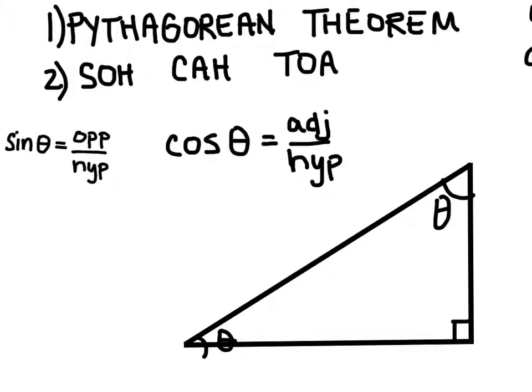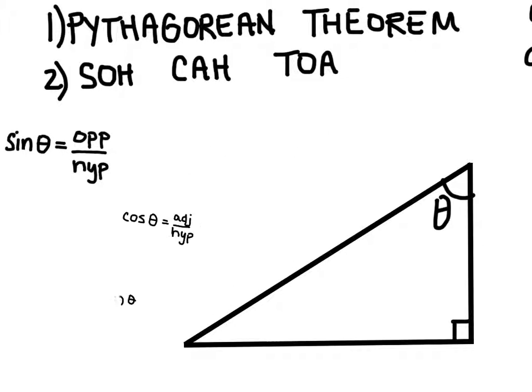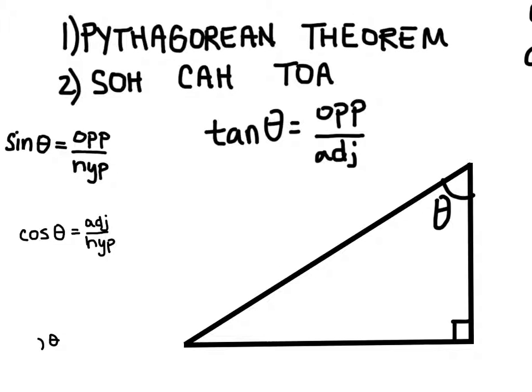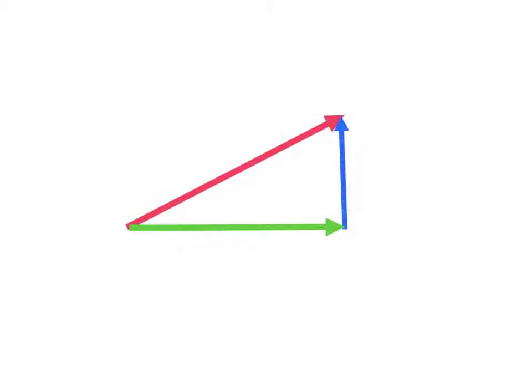The last one is the tangent of theta, which equals the opposite side over the adjacent side in relation to one of these angles. What these allow us to do is if we know the angle and one of the sides, we can find the other side. For example, if I knew theta and the opposite side, I could find the adjacent side. So let's try this by looking back at our vector.